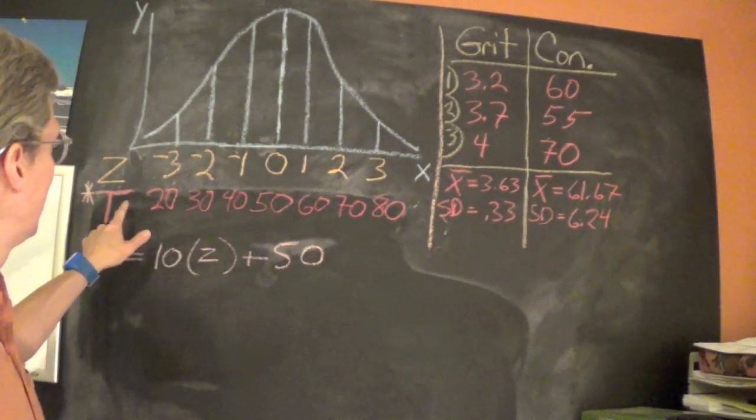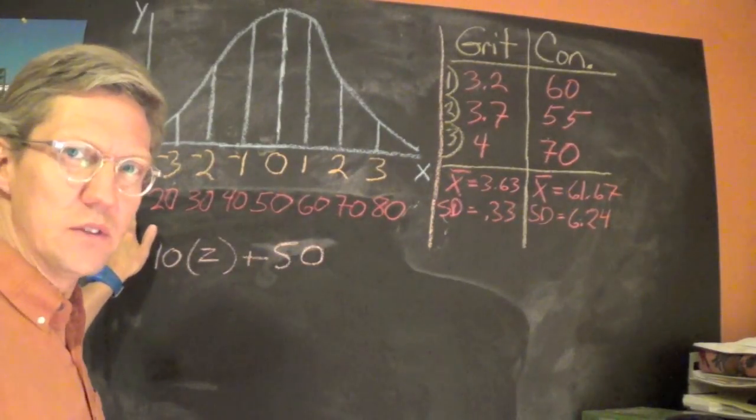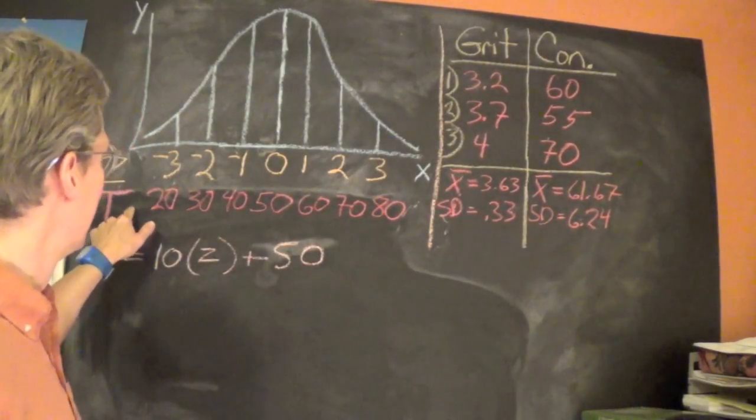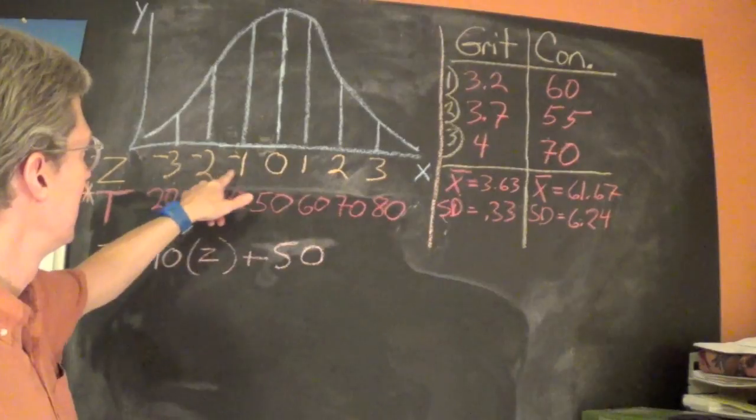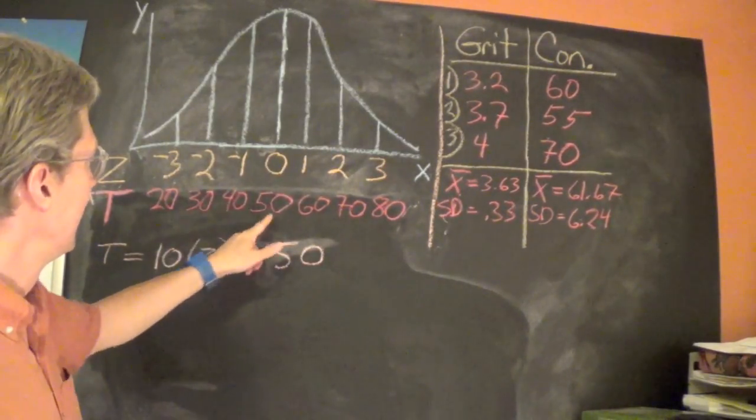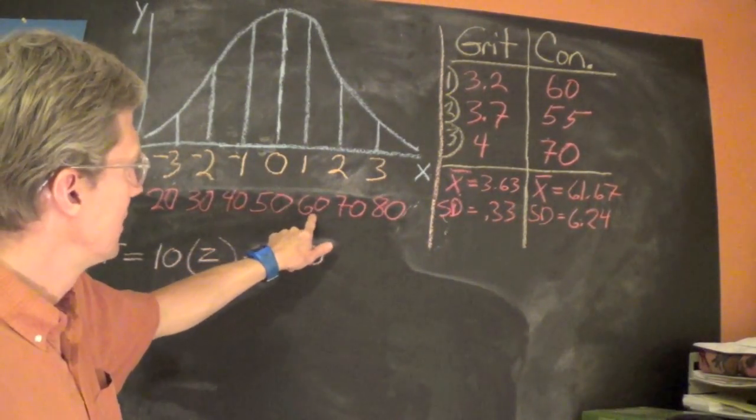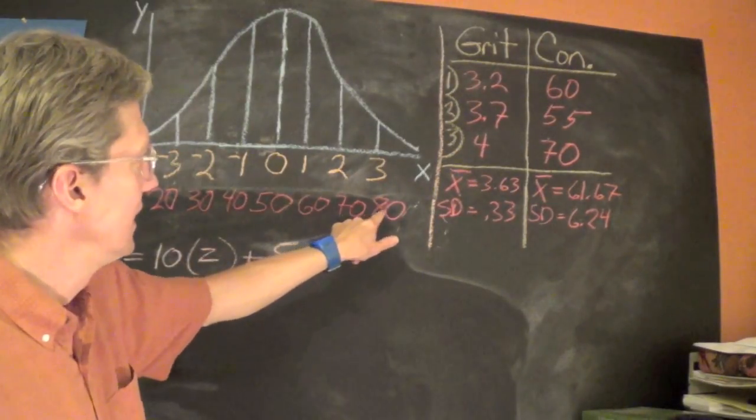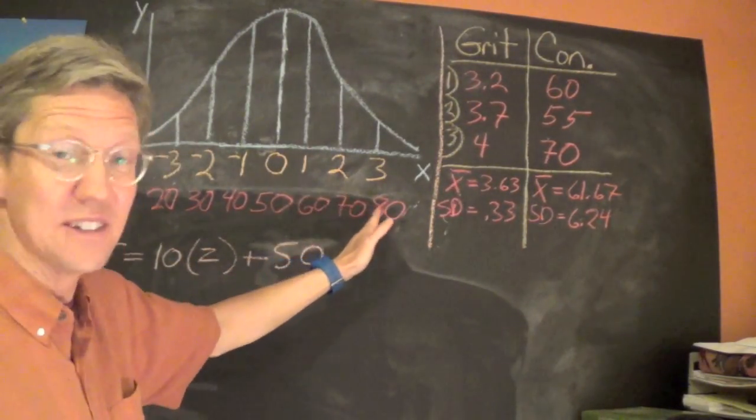What we do here, the nice property of T which makes it even easier than the Z-score is that we don't have any of the negative numbers and the mean is always going to be 50. One standard deviation above the mean is 60, 70, 80. So the standard deviation is 10.